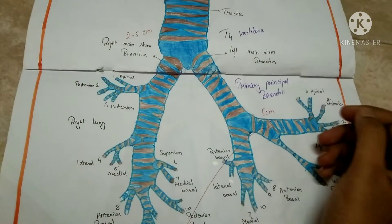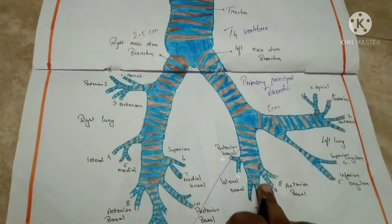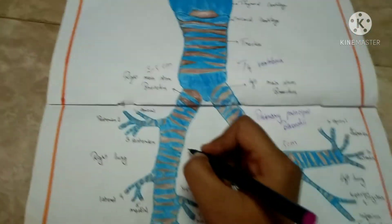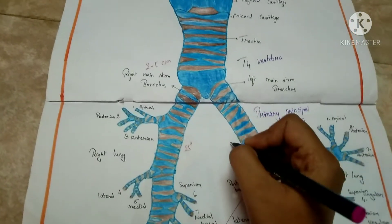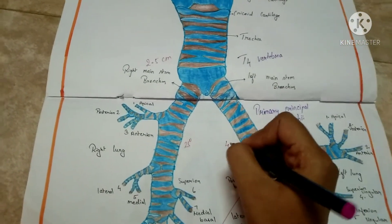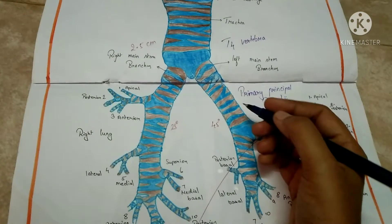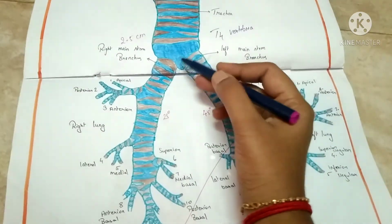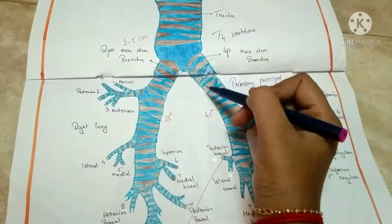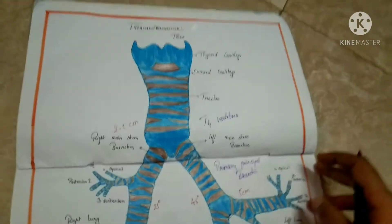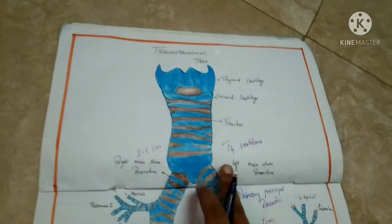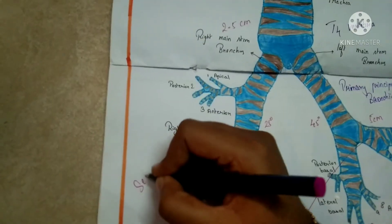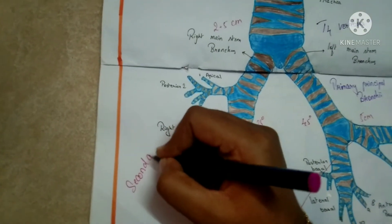The right principal bronchi makes an angle of 25 degrees with the tracheal bifurcation — the point where the trachea divides — and the left makes an angle of 45 degrees with the trachea. The principal bronchi then enter the lungs through the hilum and divide further into the secondary, or lobar, bronchi.